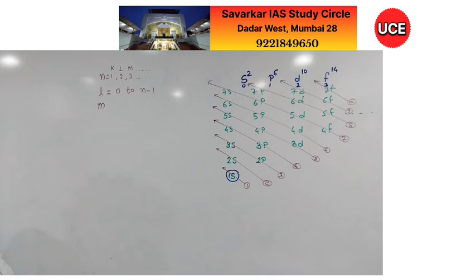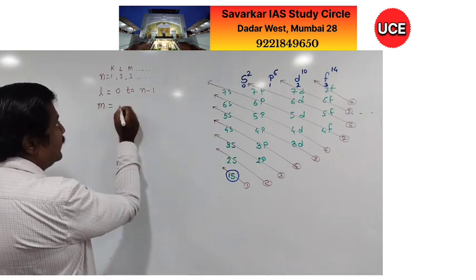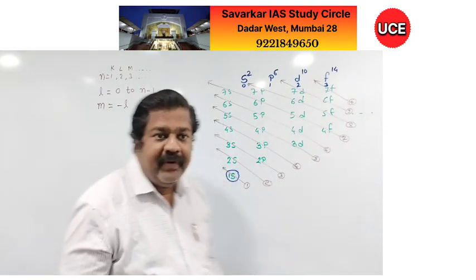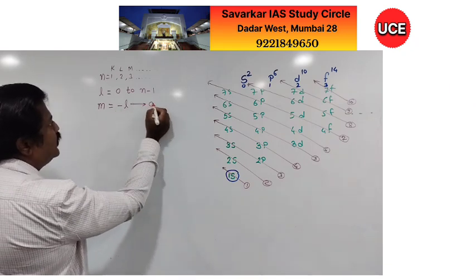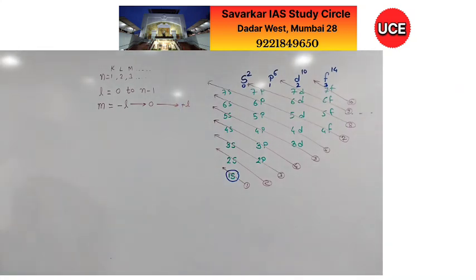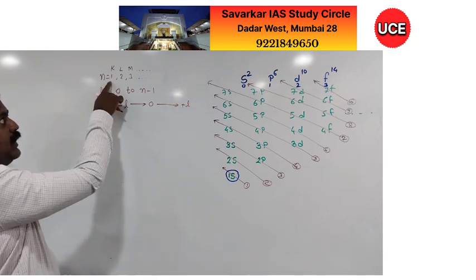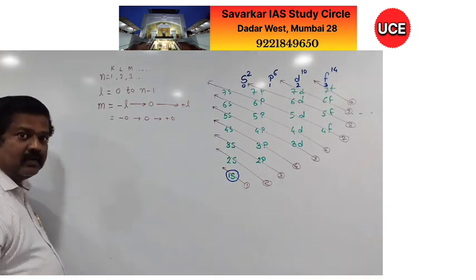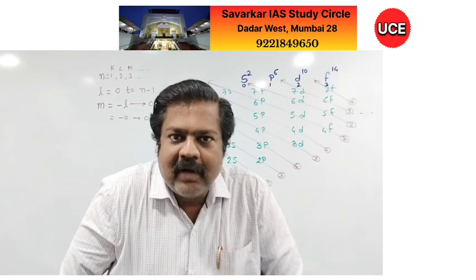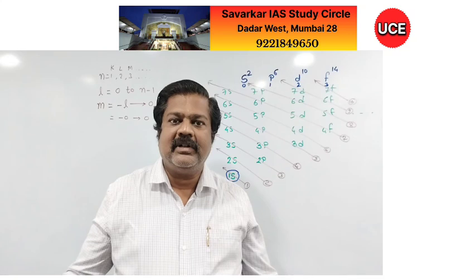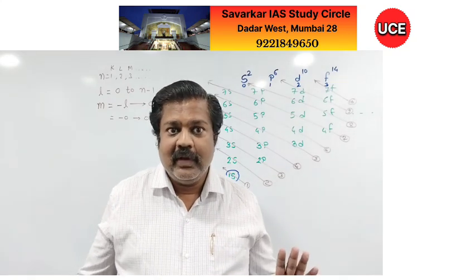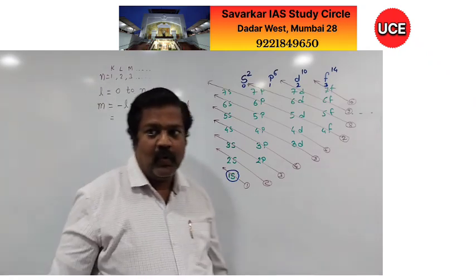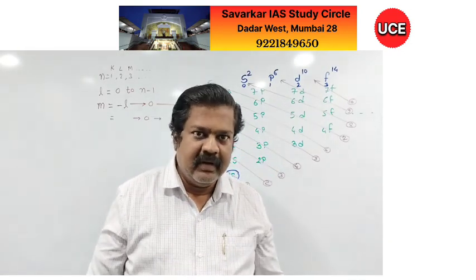The magnetic quantum number is denoted by letter m. For every value of the azimuthal quantum number l, the magnetic quantum number ranges from −l to 0 to +l. For n = 1, l = 0, so m = 0 only (there is no +0 or −0 in mathematics). This gives the spherical S orbital.